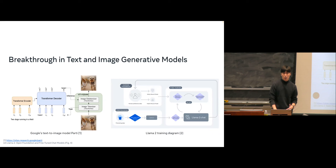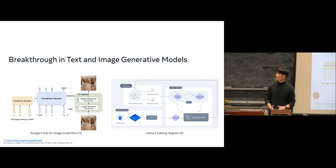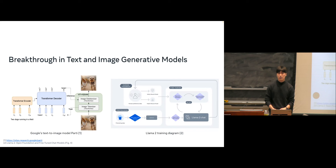I want to start this talk by introducing the breakthrough in all areas. We've seen a lot of breakthroughs in large-scale image and text generative models. On one side, we have a model from Google called Parti, which tokenizes the image and treats it as a sequence-to-sequence model from text description to image tokens, using VQVAE to convert images back from tokens to pixels.